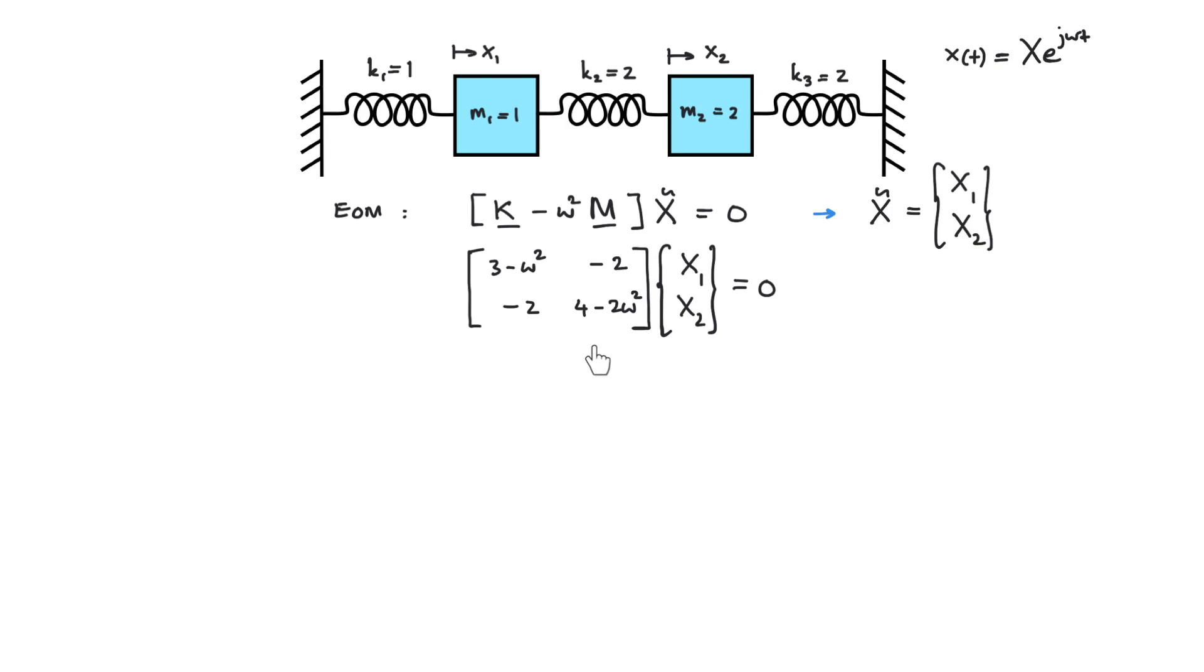From here, you can refer back to the previous video. By using the determinant, we can obtain the natural frequencies which are omega 1 equals to 1 and omega 2 equals to 2. Now these natural frequencies are the eigenvalues we've got from the coupled equations.